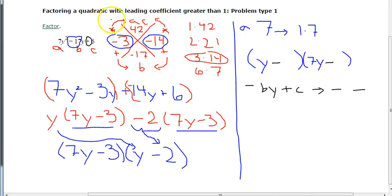And then the last thing I do is I look at the C term. And my C term is 6. And again, I write down all the factors that I can do that multiply together to give me 6. So that's 1 times 6, or that's 2 times 3.